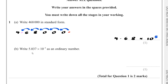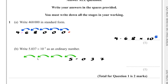Part B: Write 5.037 × 10⁻⁴ as an ordinary number. I've got 5.037 and I need to move the decimal point 1, 2, 3, 4 places to the left, leaving me with 0.0005037.